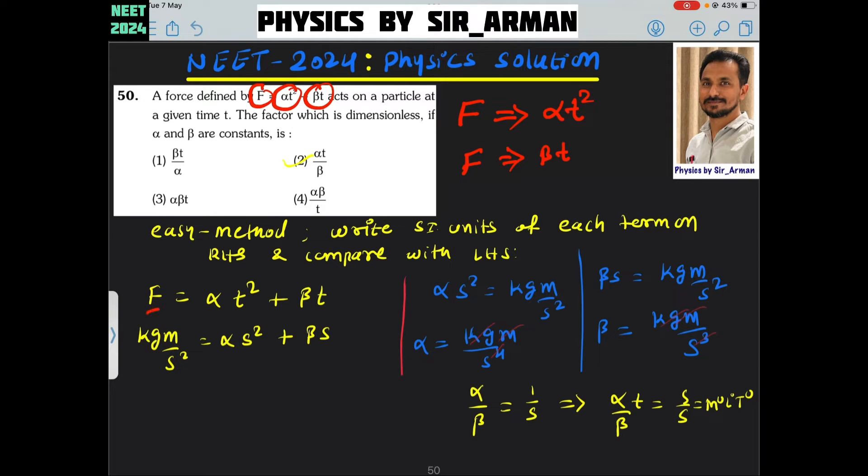So here F, the units of F are kg meter per second square. Alpha as it is, here it is T. So the unit of time is second, so it is second square. It is beta and unit of time is second.